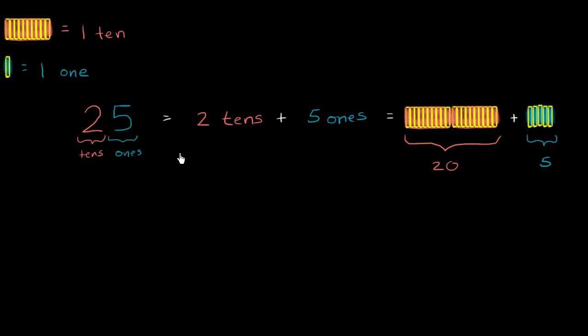You could view this as two tens plus five ones, or you could view this as 20... let me write this down, 25. You could view, because this two is two tens, that represents 20 plus the five ones.